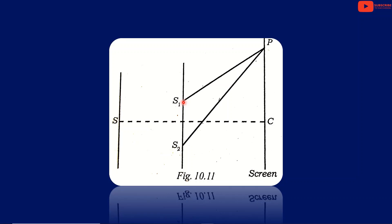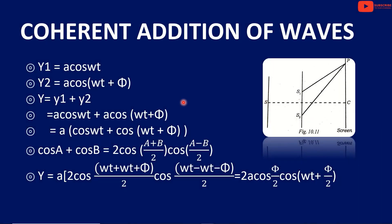We will discuss the displacement of y1. The displacement y1 is equal to a cos(ωt). The displacement y2 is equal to a cos(ωt + φ). The resultant displacement y is equal to y1 plus y2.